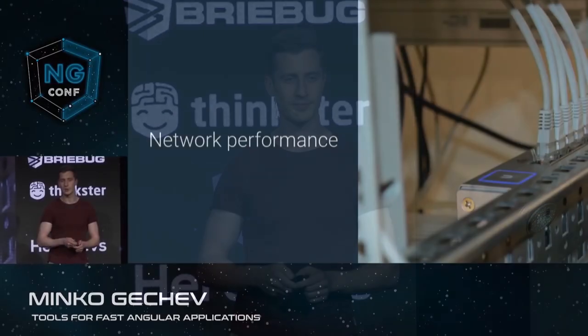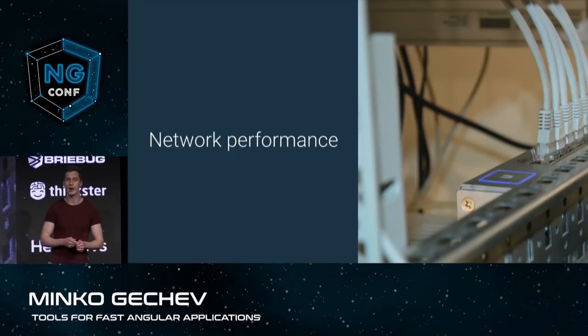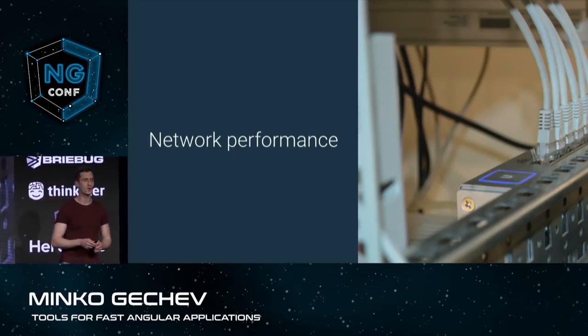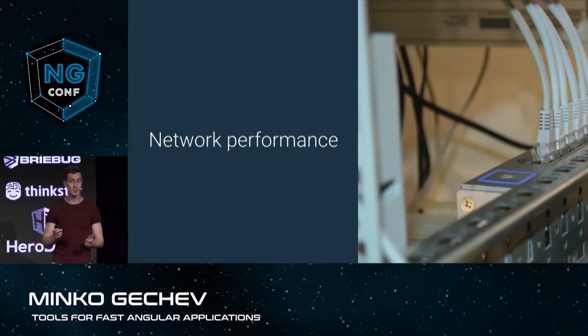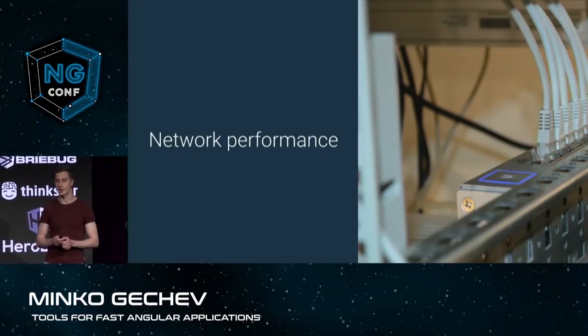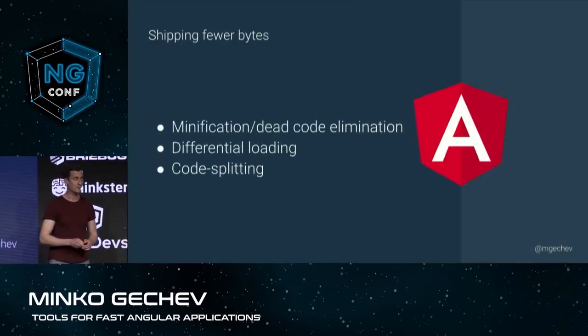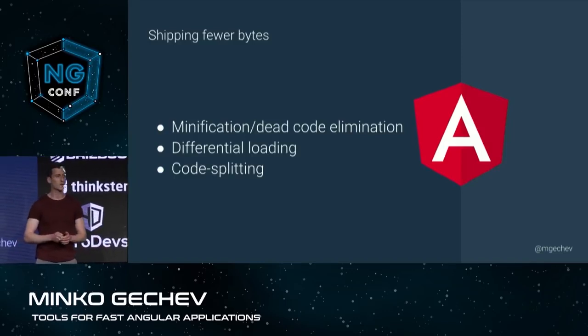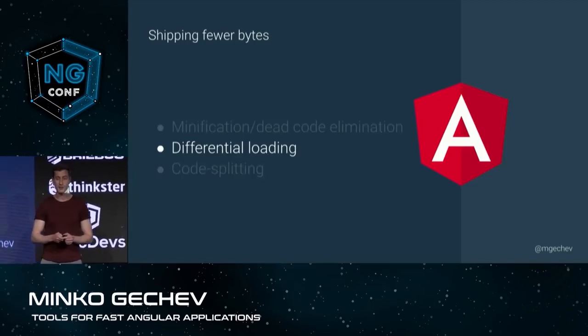Today, I'm going to be talking about a couple of tools that we have been working on over the past few months, which aim to help you build faster in your applications. We can optimize the network performance of our app just by reducing the number of bytes we're transferring over the wire and reducing the number of network requests we're also sending. Something new that we have been working on together with Manfred from the community, which we are going to introduce as part of version 8, is differential loading.